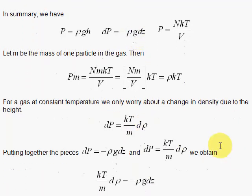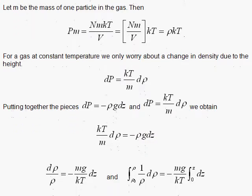So we do that, we get KT over M, D rho, that's a DP, and the other DP is minus rho G, DZ. So to solve this setup, we get all the rows on one side of the equation. So let's do that. We get D rho over rho is equal to minus M, G over KT. And when we integrate this, we will get the logarithm of rho, and here we integrate DZ, we're just going to get Z.